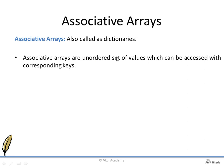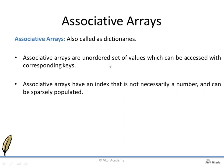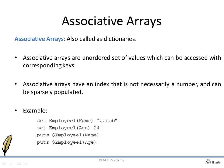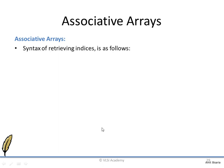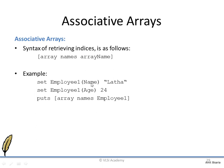Associative arrays are an unordered set of values which can be accessed by their corresponding keys. They have an index that is not necessarily a number — it can be anything, and they are sparsely populated. For example, 'name' and 'age' are two keys; knowing these keys allows us to retrieve the corresponding values. The syntax for retrieving all indexes uses the 'array names' command: 'array names arrayName'. For example, 'puts [array names employee]' will give us all keys present in that array — which would be 'name' and 'age'.